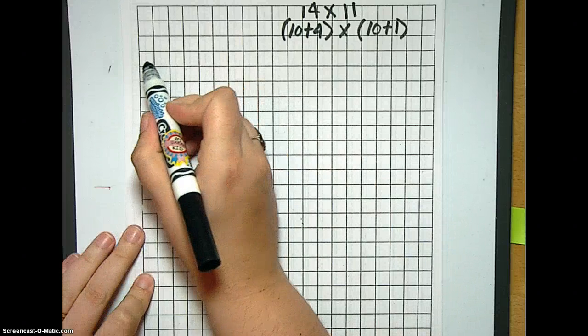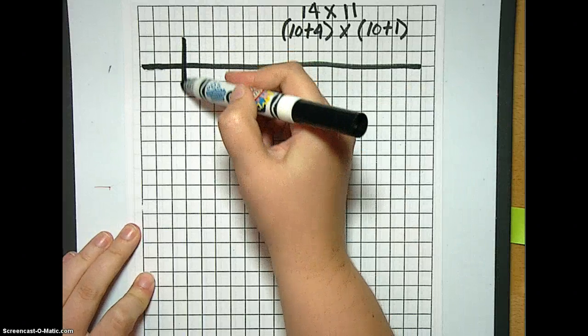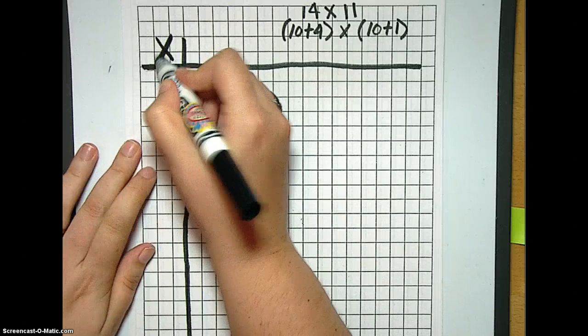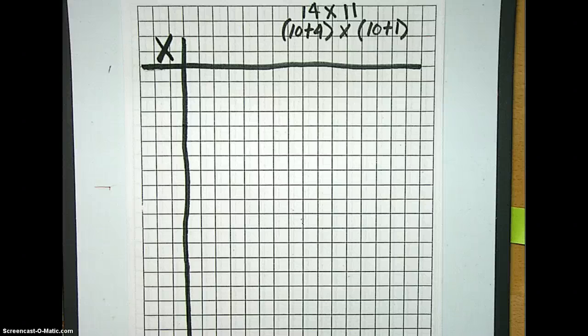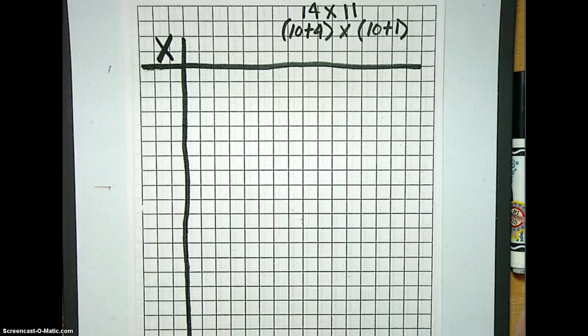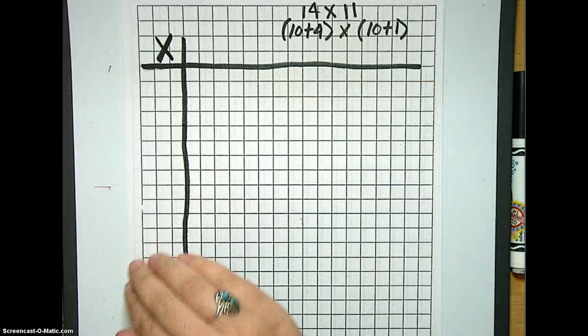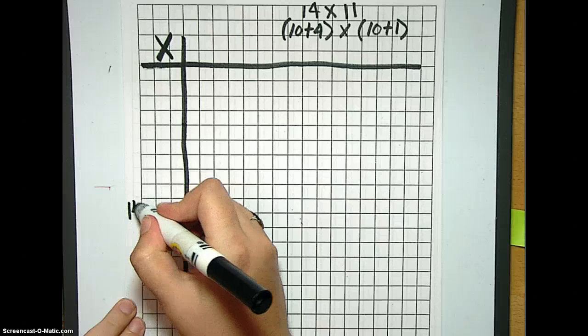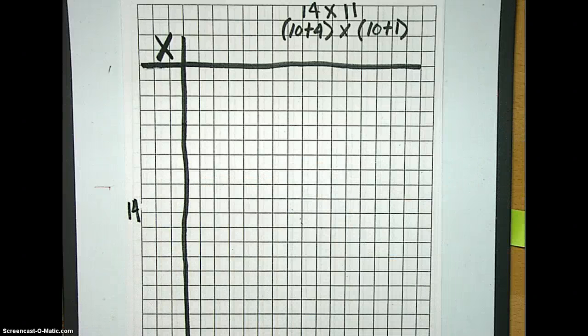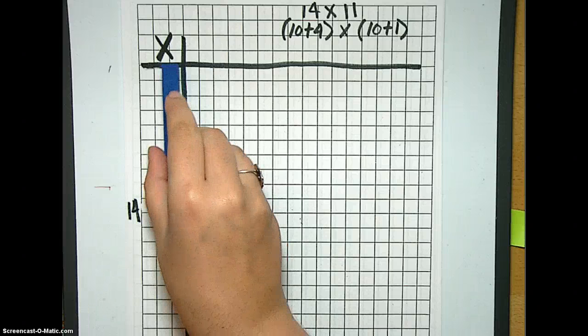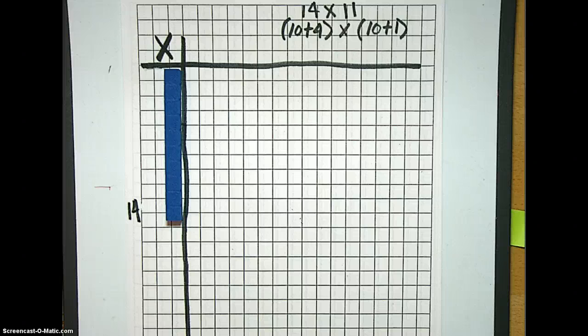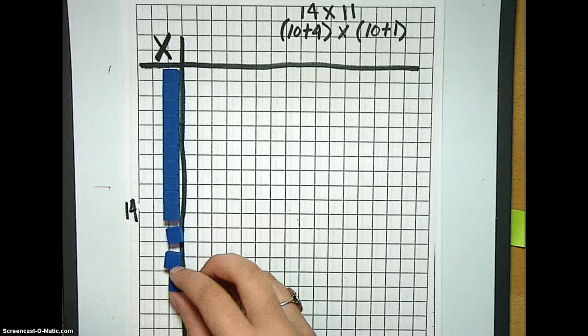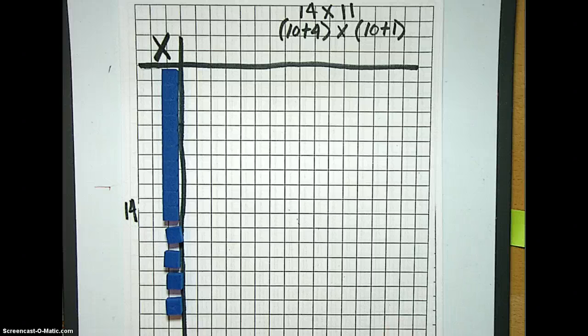So I'm going to draw a multiplication chart, and I make mine nice and big so that all my base blocks can fit on them. And I'm going to put an X up here so that I remember that I'm multiplying. So let's go ahead and make 14. I always put the first number on the left side of the page, but it really won't make a difference which number goes where. But I'm going to put my 14 here. And we know that 14 is 10 plus 4, so we're going to use our base blocks. There's 10. Now we need 4. 1, 2, 3, 4. Awesome. Got it.